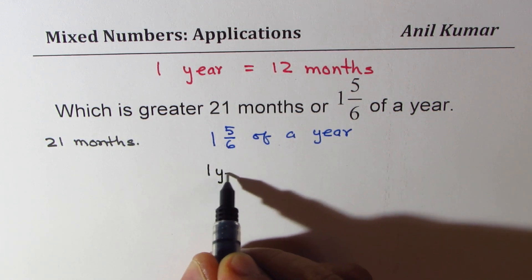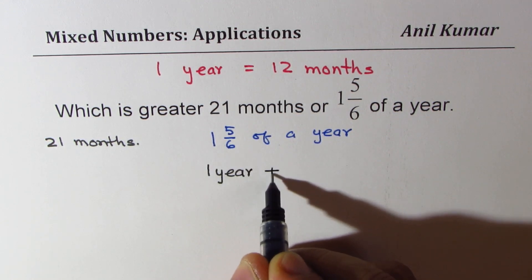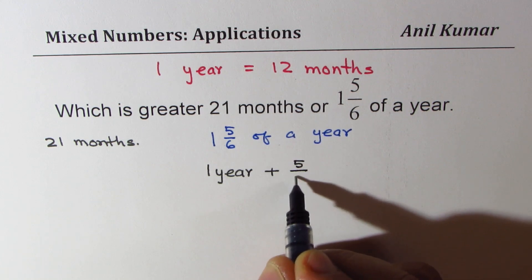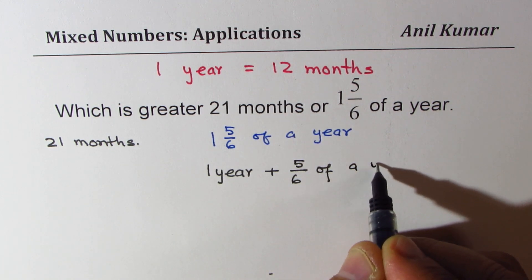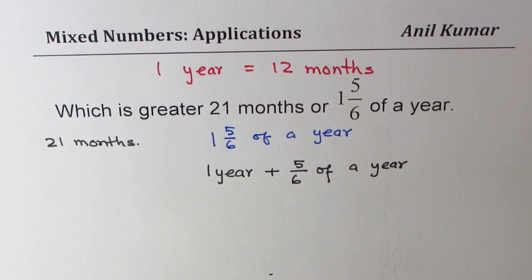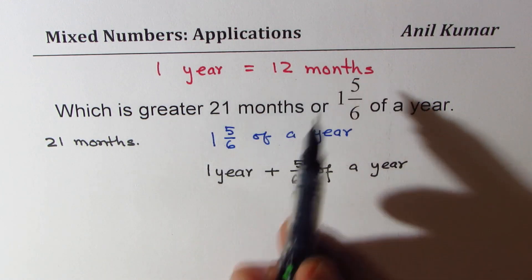that means one year plus 5/6 of a year. So in months, one year is 12 months, we